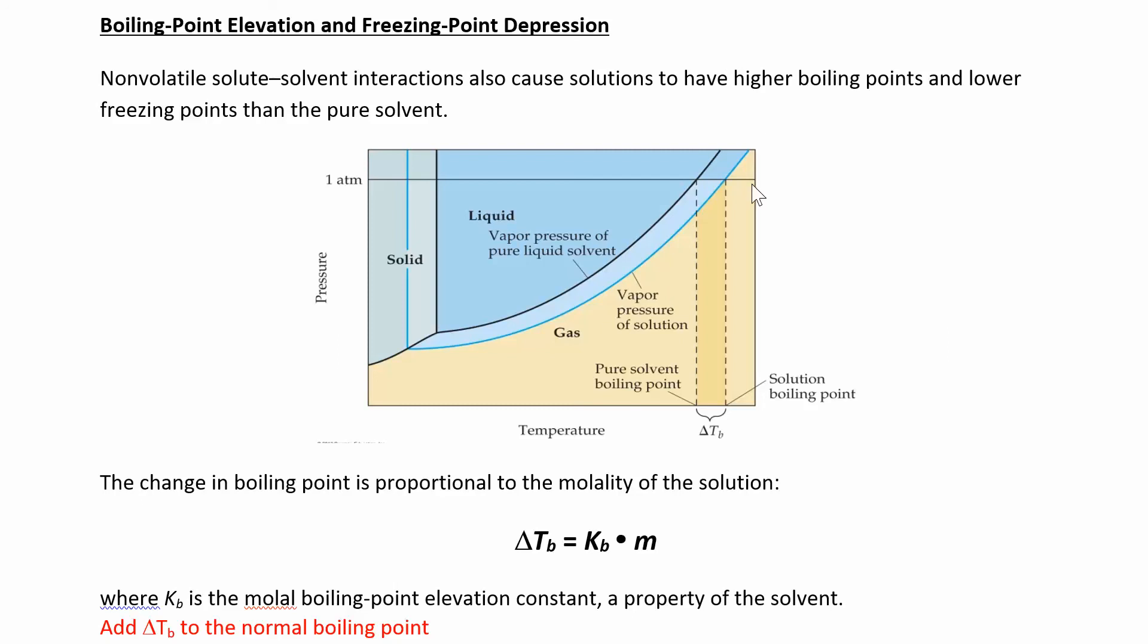Usually we're dealing with aqueous solution, so we're going to look at water. This is a phase diagram showing you solids, liquid, gases. The black line is the regular solvent and the blue line is what happens when you make a solution. So when you add some solute to the water, the boiling point is going to go up.